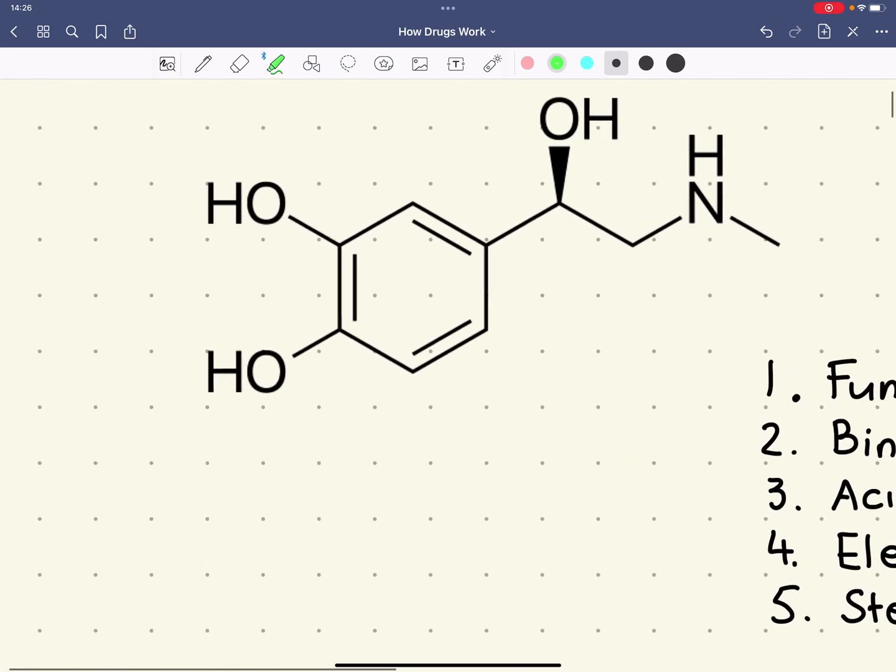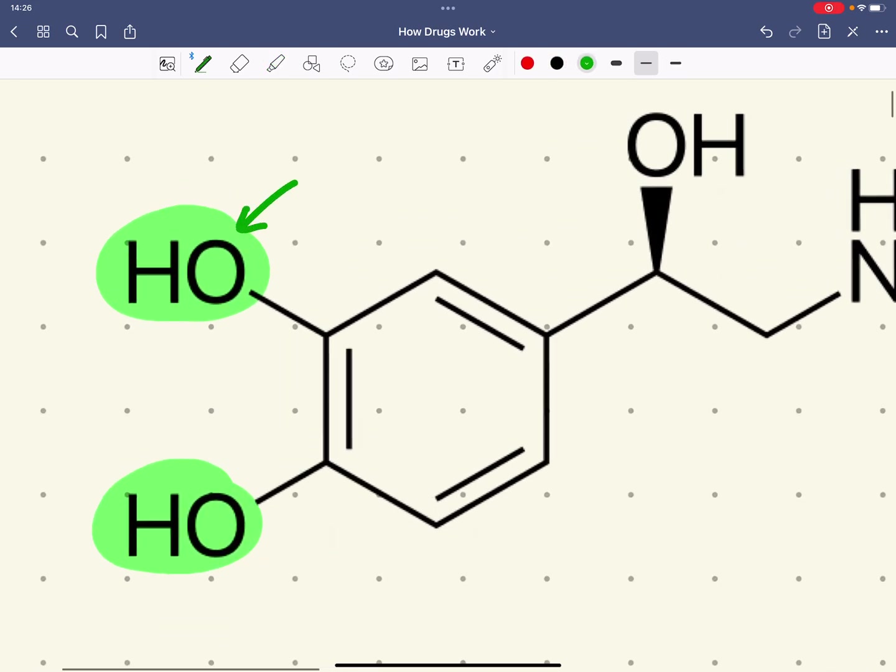So we should be able to recognize that we've got two phenol groups. So an OH, which is bonded to a benzene ring is called a phenol.